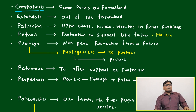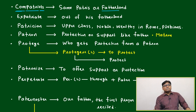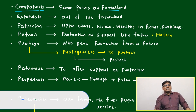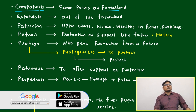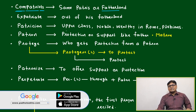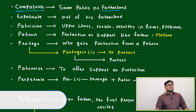"Com" means together, or at the same time, or happening together. "Patr" means father or fatherland. So same patries, or same fatherland, is called compatriots. Compatriots means same fatherland — meaning some particular place.